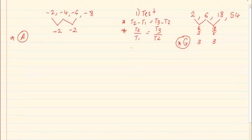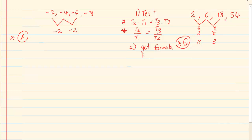The second thing they're going to ask you is to get the formula. They would use words like 'get the formula of the following number pattern' or 'find the general term of the number pattern.' When doing that, we're going to write down our TN, N, A, and D — or if it is geometric, R.